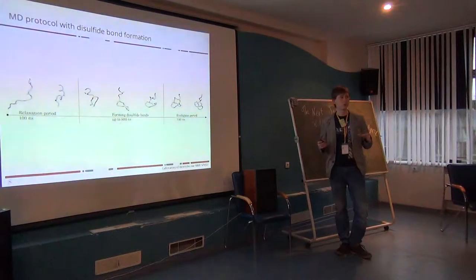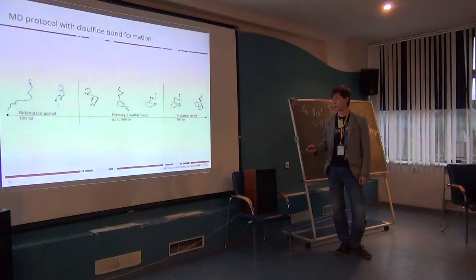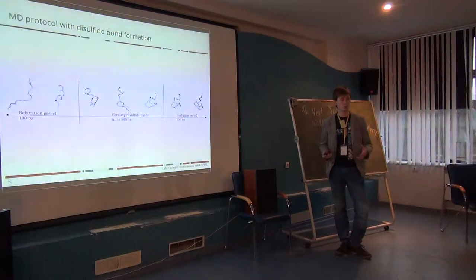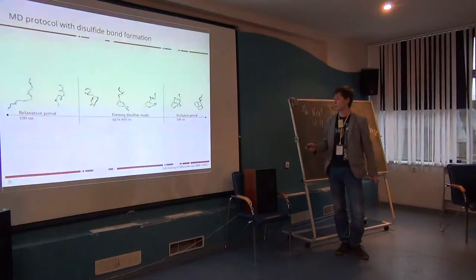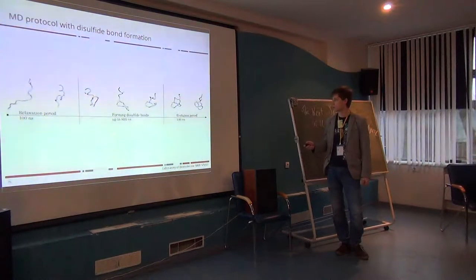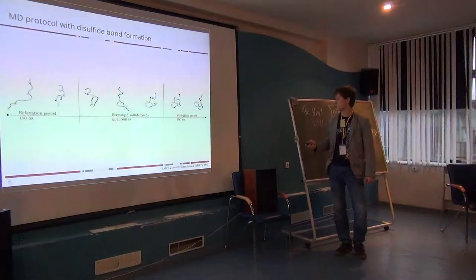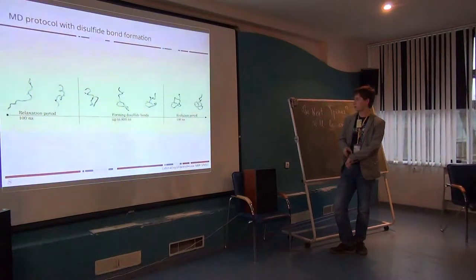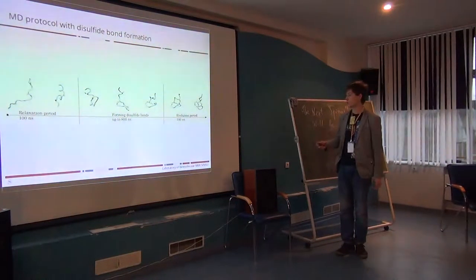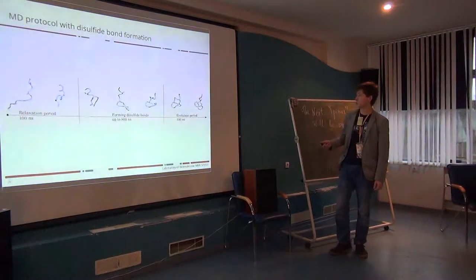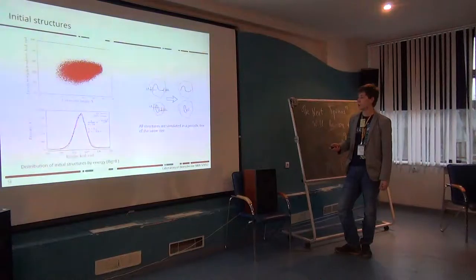We simulate disulfide bond formation with this protein. The whole protocol consists of three parts. It's a relaxation period when we start from random conformation in explicit solvent and run conventional MD simulations for 100 nanoseconds to let the protein explore conformational space. After 100 nanoseconds we start disulfide bond formation protocol, and our guanylin makes at first one bond, then another one. After both bonds are formed, we perform one more 100 nanosecond period to let this formed peptide explore conformation space again.